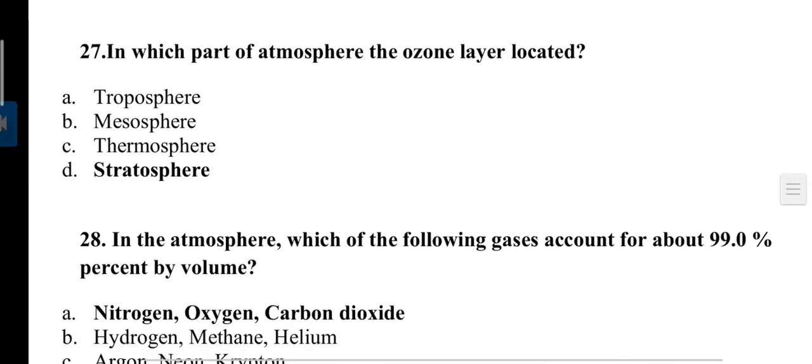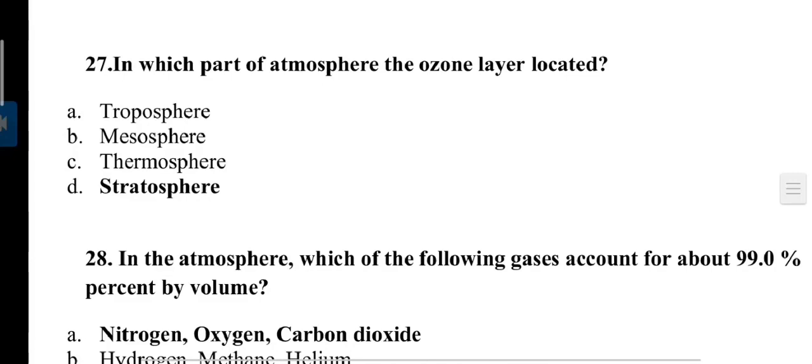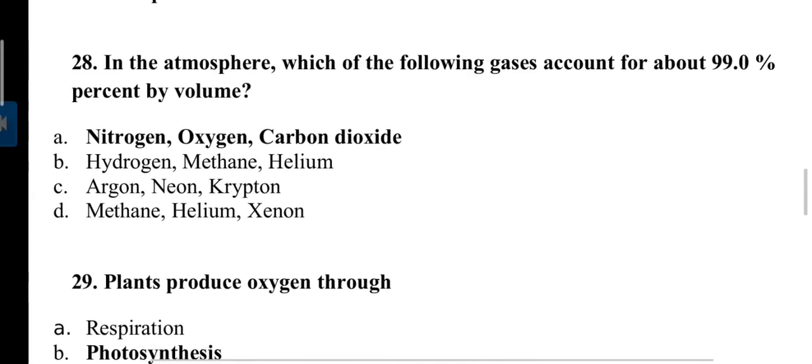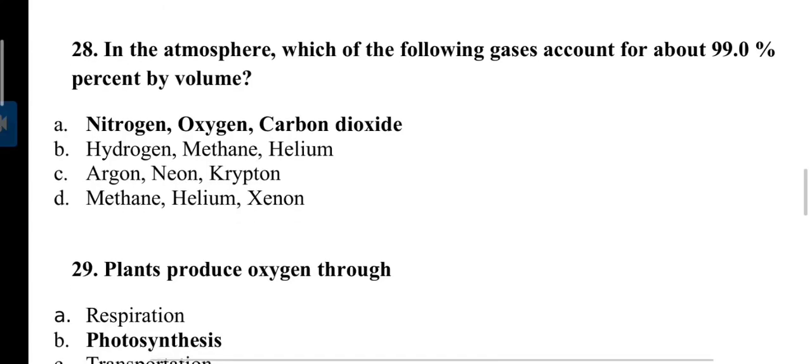In which part of atmosphere is the ozone layer located? Answer is stratosphere. Stratosphere is the warmest layer of the atmosphere. In the atmosphere, which of the following gases account for 99% by volume? Answer is nitrogen, oxygen, and carbon dioxide. Percentage of these gases are: nitrogen approximately 78%, oxygen 20.95%, carbon dioxide 0.03%.